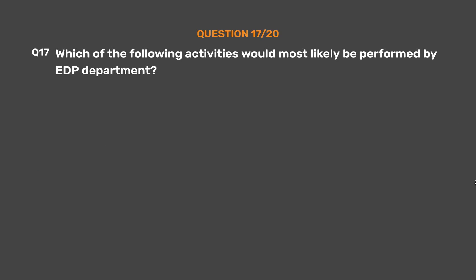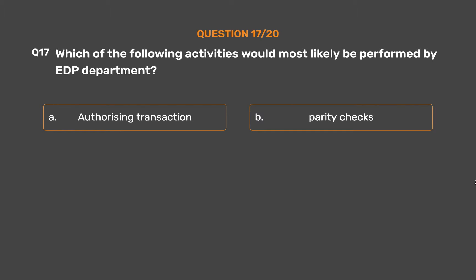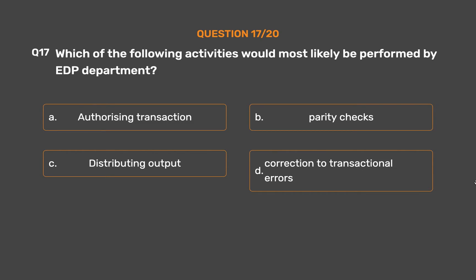Question number 17. Which of the following activities would most likely be performed by the EDP department? Option A: Authorizing transaction. Option B: Parity checks. Option C: Distributing output. Option D: Correction to transactional errors. The correct answer is Option C — Distributing output.